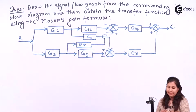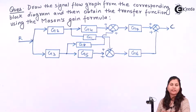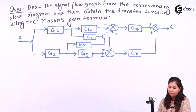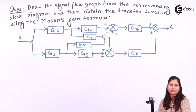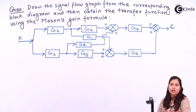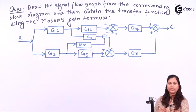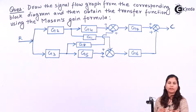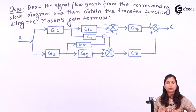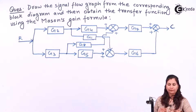We are given the block diagram of the system and we have to find out the transfer function of the system using the Mason's gain formula. Mason's gain formula is used for the signal flow graph, so we have to convert this block diagram into its corresponding signal flow graph. Let's see how we can do that.